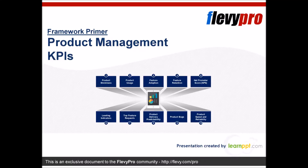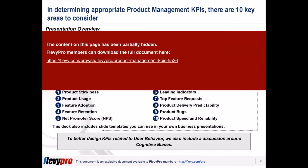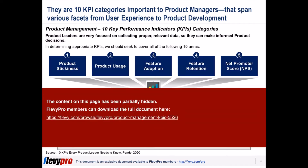Product managers are responsible for defining the features or functions of a product and for overseeing the development of the product. The role of product managers spans many activities from developing product strategy to tactical planning, and can vary based on the organizational structure of the organization.